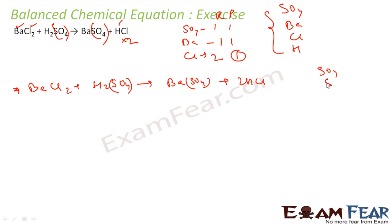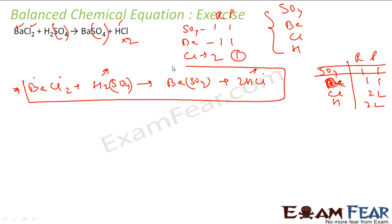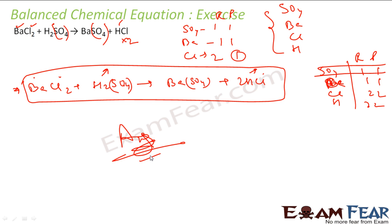Now let's verify. Sulfate: 1 and 1 — balanced. Barium: 1 and 1 — balanced. Chlorine: 2 here and 2 here — balanced. Hydrogen: 2 in reactant, and 2 in product — balanced. Everything is balanced. This is my balanced chemical equation.